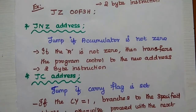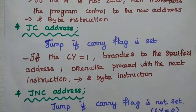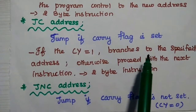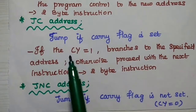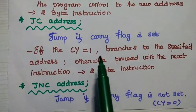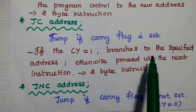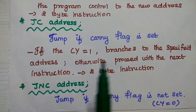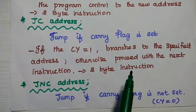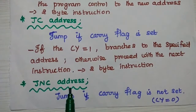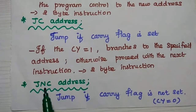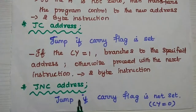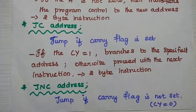JC address means jump if the carry flag is set. That is, if the carry flag is equal to 1, jump to the specified address; otherwise, proceed with the next instruction. JNC address means jump if the carry flag is not set.